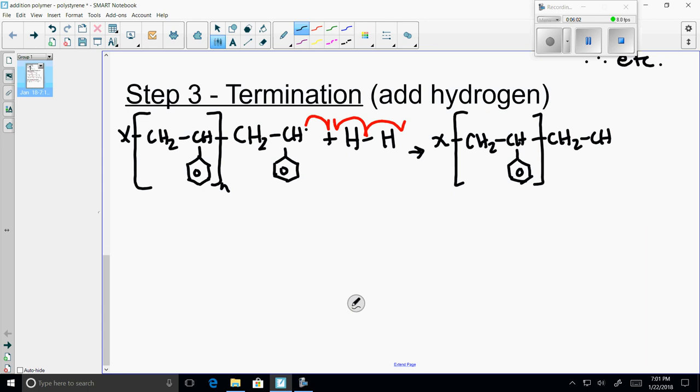Now, when we join the hydrogen, this now becomes a CH2 group. It's no longer a free radical, and the other hydrogen is a free radical that can go on to terminate another growing polystyrene chain.